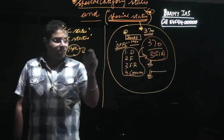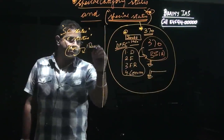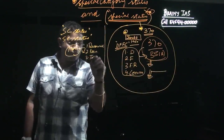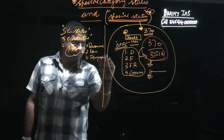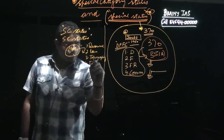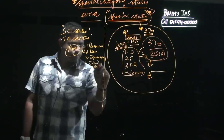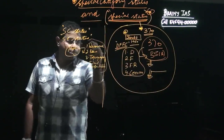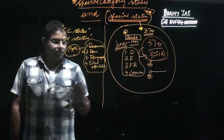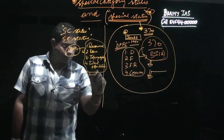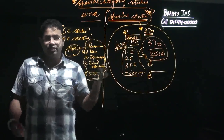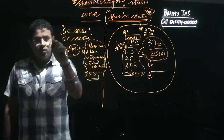Special Category States were those states which were low in terms of resources, had low population, had difficult topography, had a large number of tribal population, and were hilly states. These were the conditions by which the special category status was accorded to certain states.